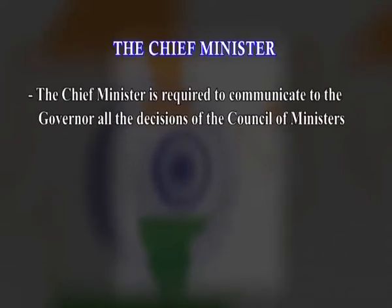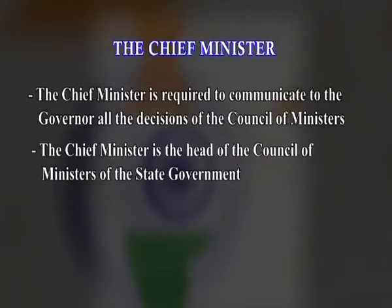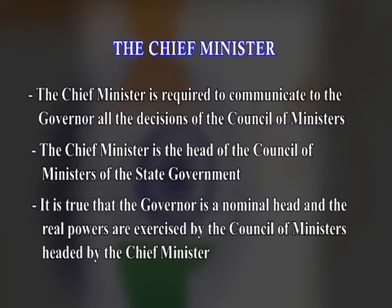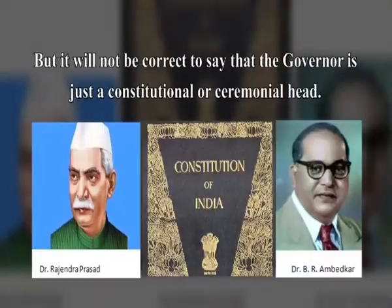The chief minister is required to communicate to the governor all the decisions of the council of ministers. The governor may call for necessary information related to the state administration. If a minister individually takes a decision, the governor may ask the chief minister to place such a matter before the council of ministers. It is true that the governor is a nominal head and the real powers are exercised by the council of ministers headed by the chief minister. But it will not be correct to say that the governor is just a ceremonial head. He or she can exercise powers effectively under certain circumstances, especially when there is political instability in the state. Since he or she is a link between the central and state governments, the governor becomes very effective when the central government sends directions to the state government, and these discretionary powers make the governor act as a real executive in particular circumstances.